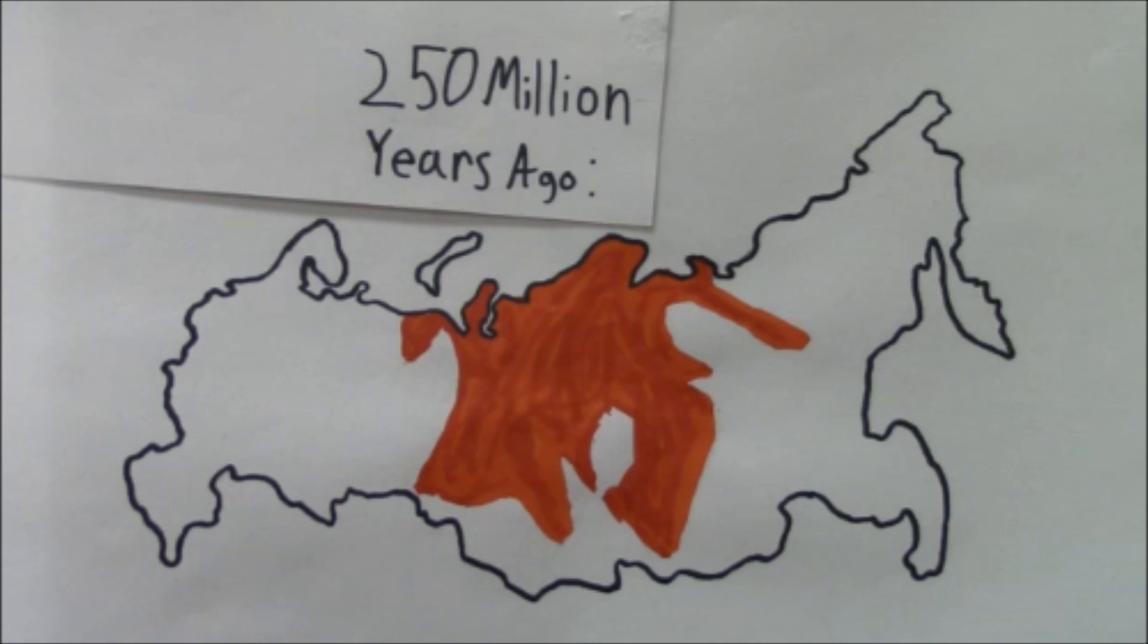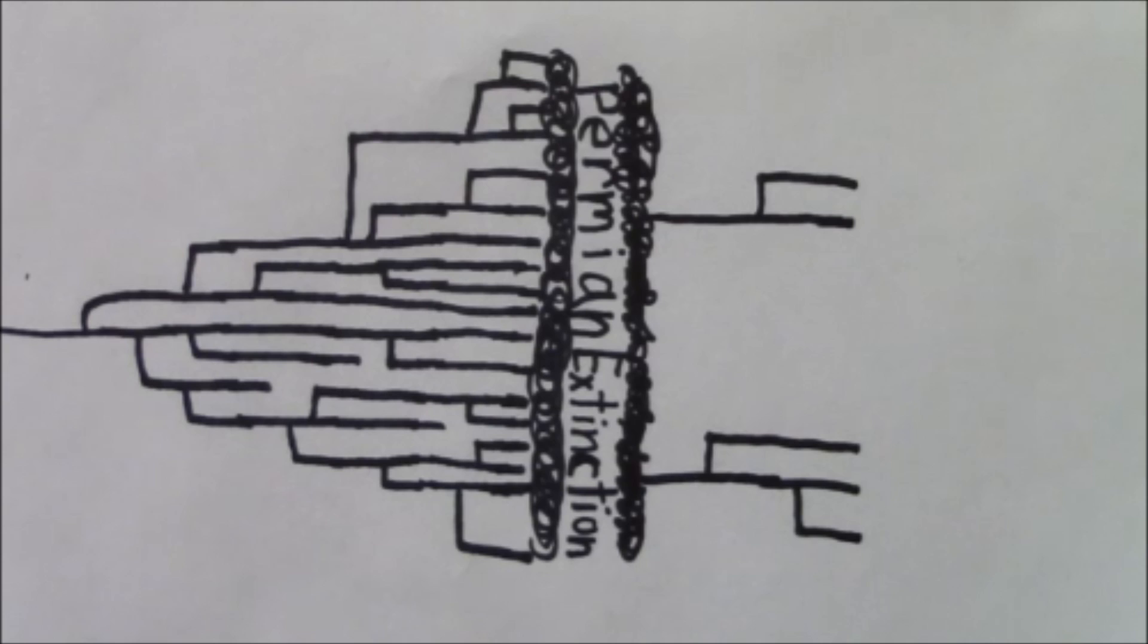That age is important, because that places this particular eruption at one of the biggest extinction events in the history of the planet. The Permian extinction killed around 90% of all life on Earth. This extinction left the world completely barren, and set the stage for the development of the dinosaurs in the Triassic.